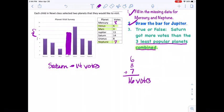Now let's see if we can figure out this true or false question that we have here. Saturn got more votes than the three least popular planets combined. So now let's see how we could replace some of these words with the numbers that we have to see if that's a true statement or a false statement. What if we said, instead of Saturn, what if we said 14? And what if we said, instead of three least popular planets combined, what if we said 16? And then what if we reread it? 14 is more votes than 16. Is that true or false? Well, 14 is not more than 16. So that is false.